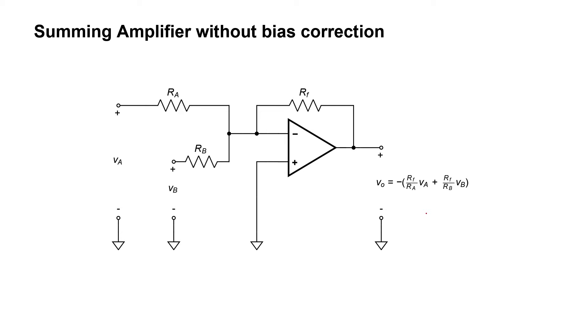Let me show you how this circuit works. Because the non-inverting pin is grounded, we know that the voltage here at the inverting pin should also be zero volts. Let's call this current I sub A, this current I sub B, and this current I sub F.